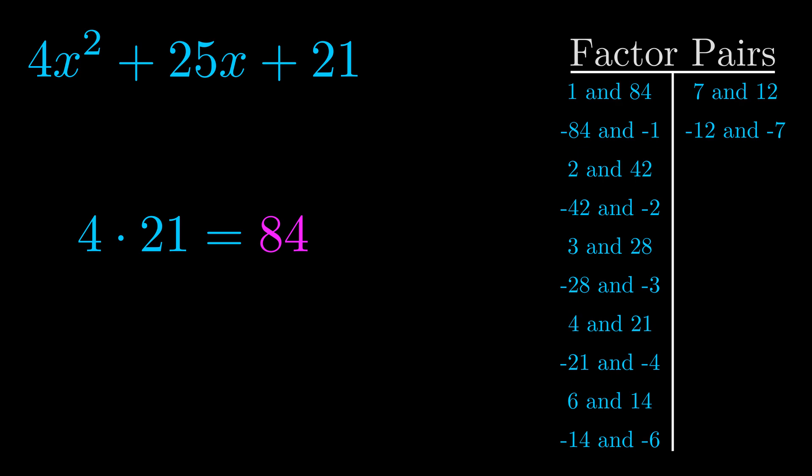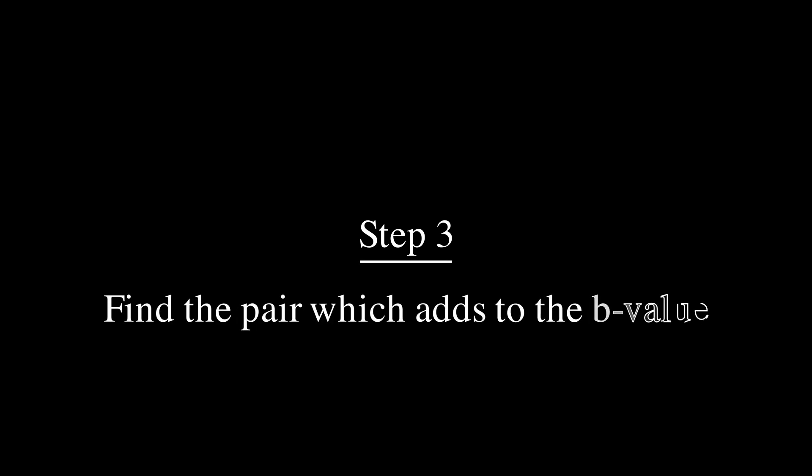Once you have these factor pairs, the goal is to find which of these pairs adds to the b value. The b value is the coefficient on the x term.